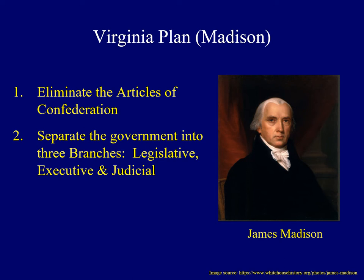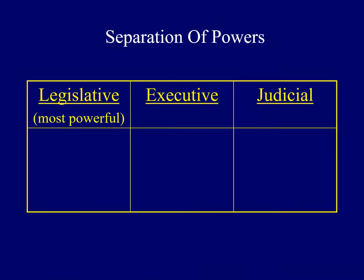A second provision of the Virginia Plan called for the division of the national government's power into three separate branches. Madison argued there should be a national legislature, executive, and judicial branch. He argued that in order to protect individual liberties, the government's power should be divided — a specific set of jobs for the legislature, another for the chief executive, and an additional set of responsibilities for the judiciary. In Madison's eyes, the legislative branch would be the most powerful of the three.